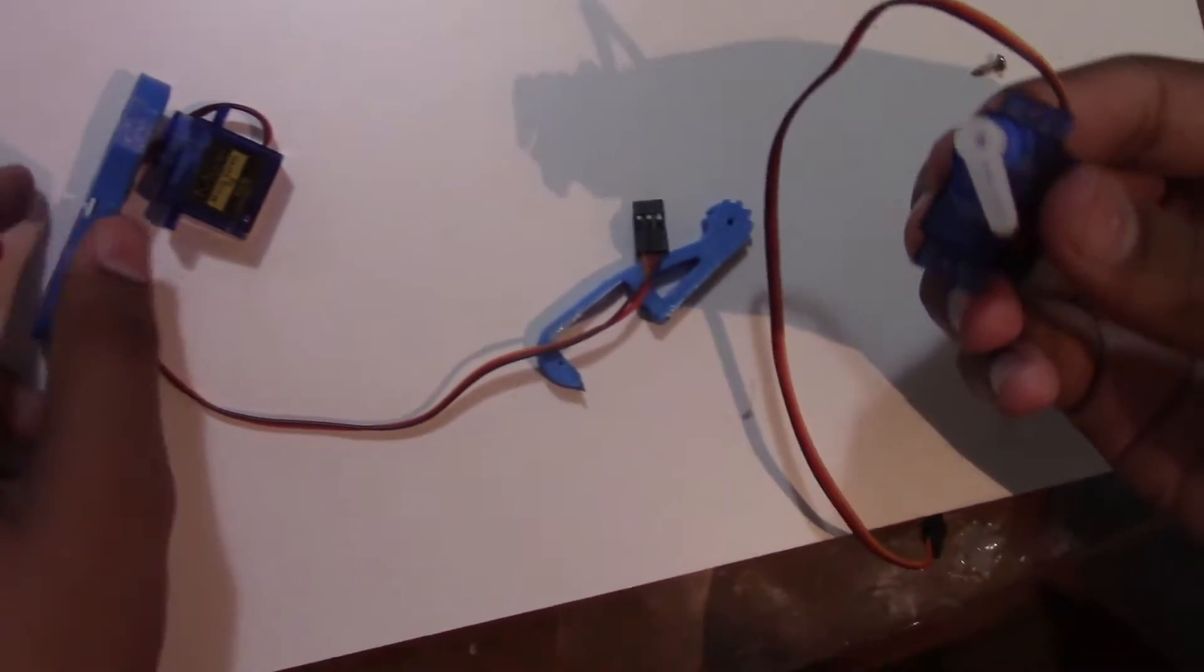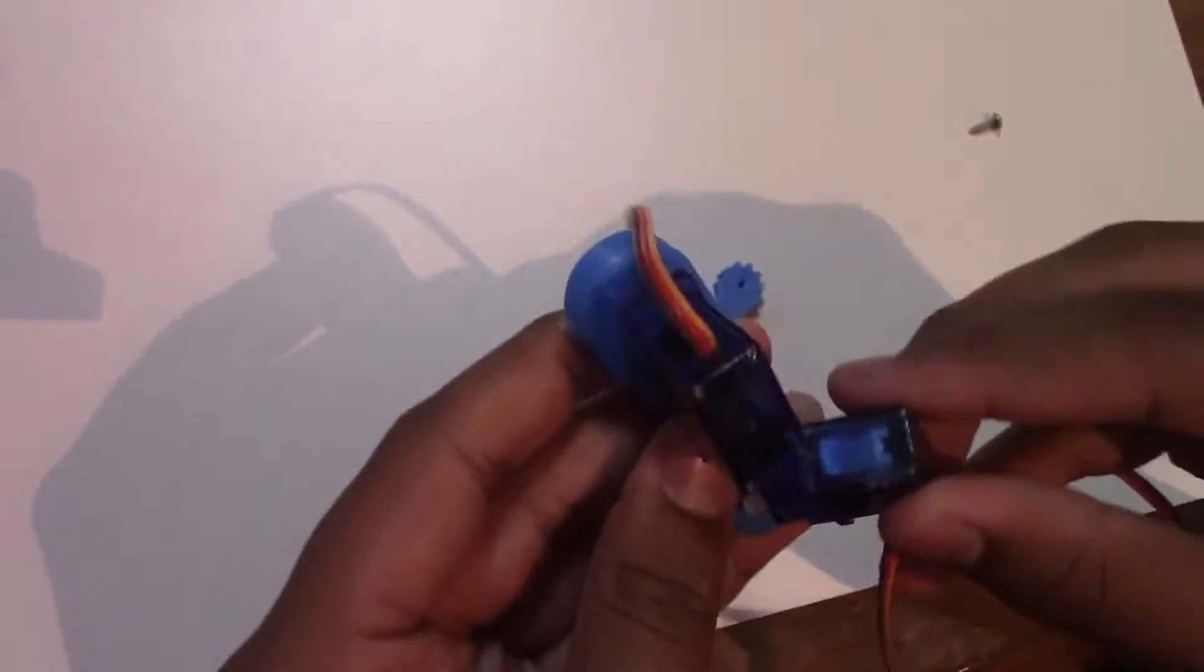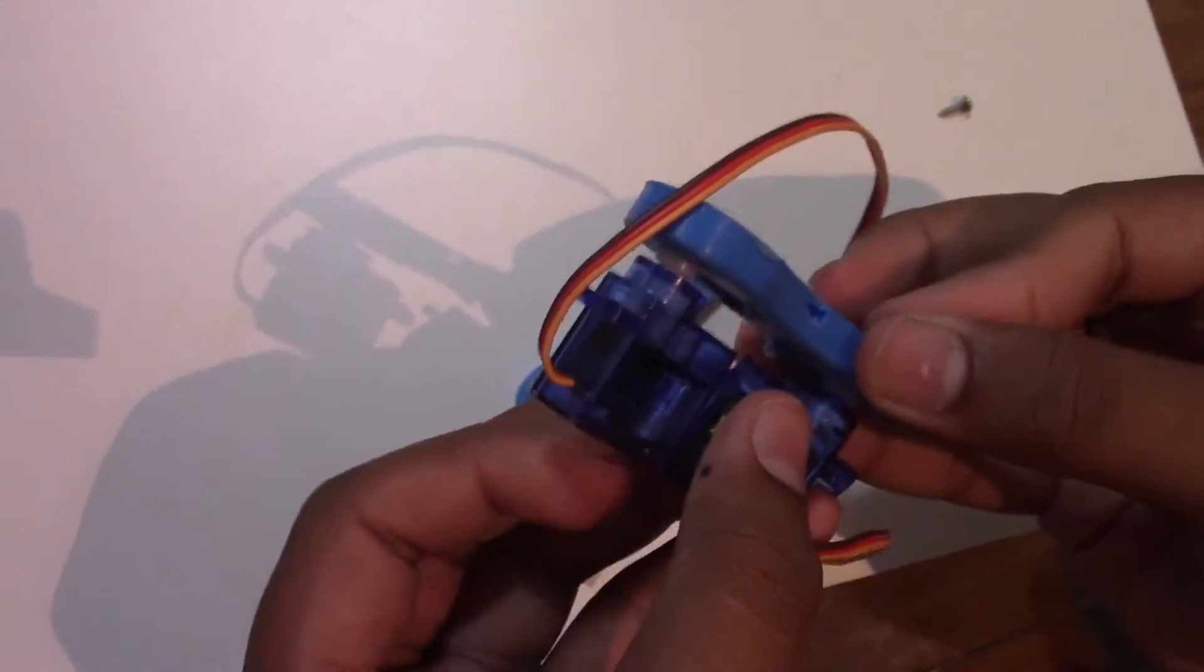Now the second one is pretty much the same thing. You get another servo motor, so you set the servo like this to 180 or zero, whichever leg you're building. Once again, it depends a lot on which leg you're building.